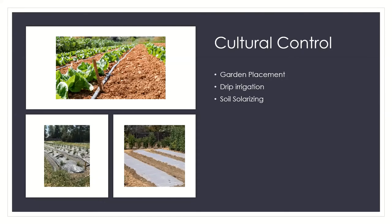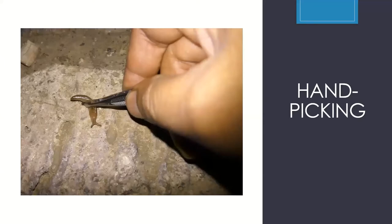Handpicking is a great way to deal with slugs. You'd have to go out at night with a flashlight and bucket, search them out, and pick them up using rubber or latex gloves. Put them in sealed plastic bags and dispose in trash, or drop them in a bucket of soapy water or diluted ammonia (about 10% solution). You can also crush them and leave them in the garden if you're comfortable with that.